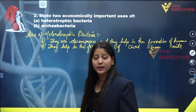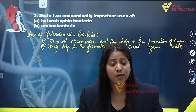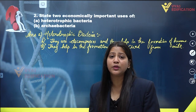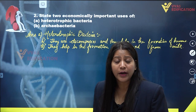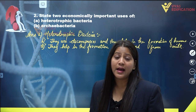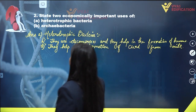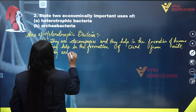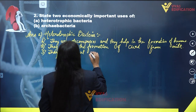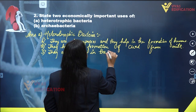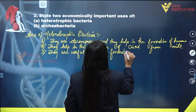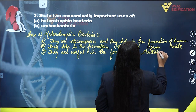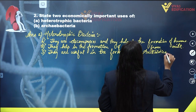Some species of bacteria are also helpful in the making of antibiotics, which are useful in the treatment of some diseases. Some antibiotics can be obtained from certain species of bacteria, and hence they are economically important to us. So the third economic importance is that they are useful in the formation of antibiotics.